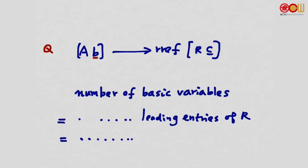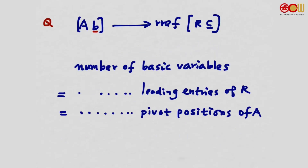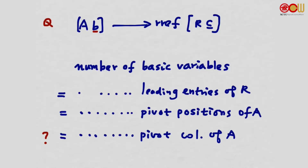Another question: would this number be the same as the number of pivot positions of A? Yes, because whenever we have a leading entry, we have a pivot position in A. And would it equal the number of pivot columns of A? Yes — whenever we have a pivot position, we have a pivot column. So all these numbers are the same.